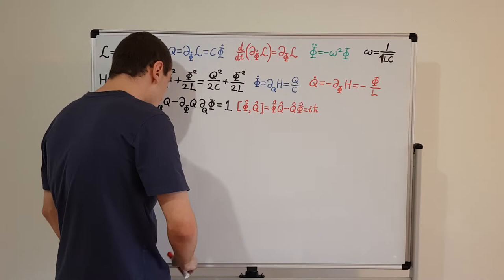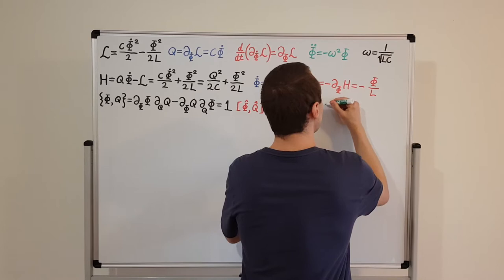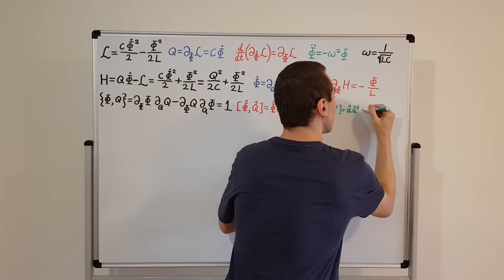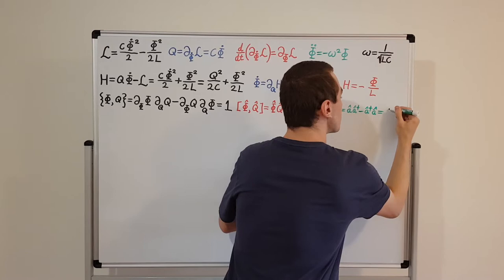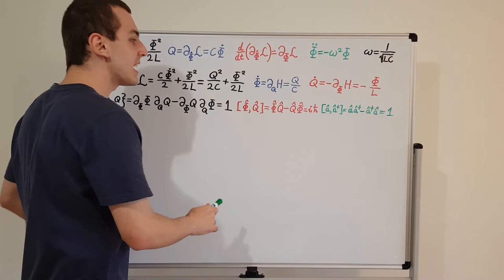Now I'm going to write down one more commutation relation, which is important — the commutation relation between the ladder operators. We have a and a dagger: a a dagger minus a dagger a equals one. This is another important commutation relation which we'll be using, where the dagger denotes the Hermitian adjoint or Hermitian conjugate.